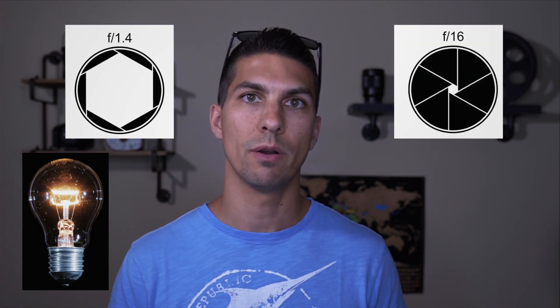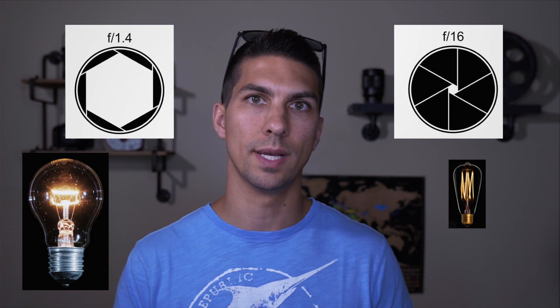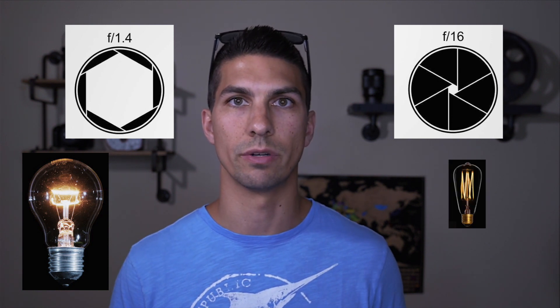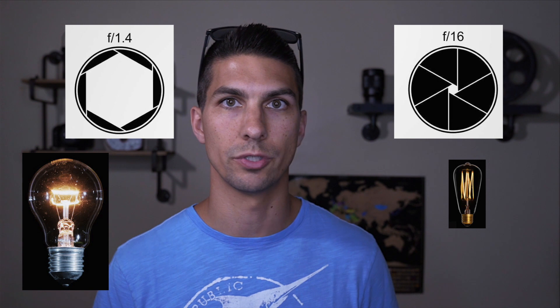Aperture has two main effects on your shots, and the most obvious of those is going to be your change in exposure, or the brightness of your images. With a wide open aperture, you're allowing more light to reach your camera sensor, which results in a brighter image. And when you have a narrow aperture, less light is able to get through your camera lens and reach your sensor, resulting in a darker image.